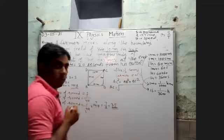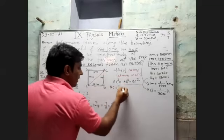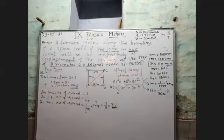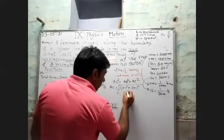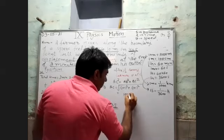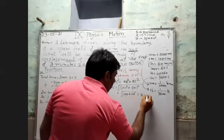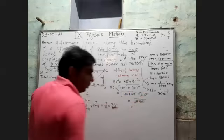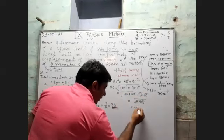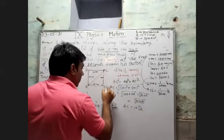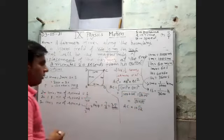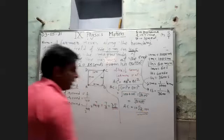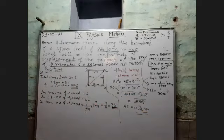AB is 10 meters and BC is 10 meters. So AC squared equals 100 plus 100 equals 200, which equals 2 multiplied by 100. Taking square root: AC equals 10 root 2 meters. This is the displacement of the farmer from his initial position.